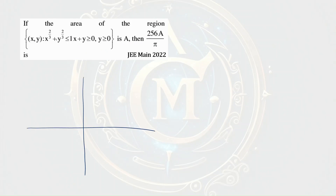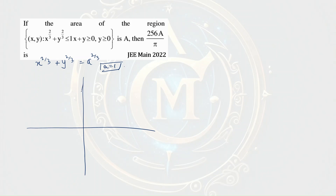The region represents an astroid. This curve is known as an astroid: x^(2/3) + y^(2/3) = a^(2/3). Here a is 1, so the curve is shaped like this.